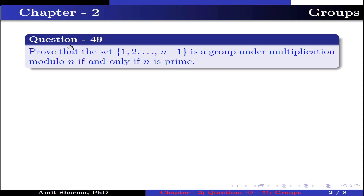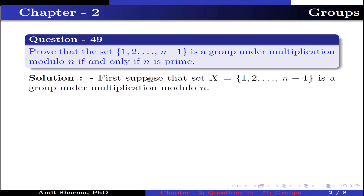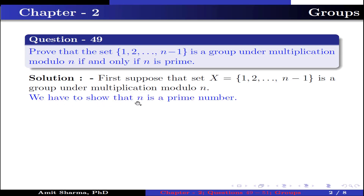Question number 49: Prove that the set X containing the elements 1, 2, up to n-1 is a group under multiplication modulo n if and only if n is prime. First, suppose that the set X containing the elements 1, 2, up to n-1 is a group under multiplication modulo n. Now we have to show that n is a prime number.